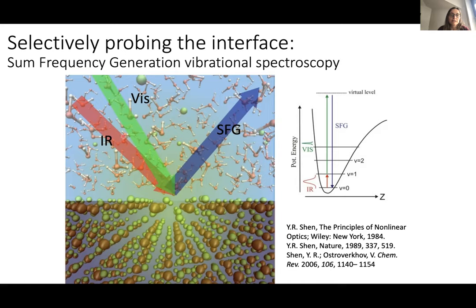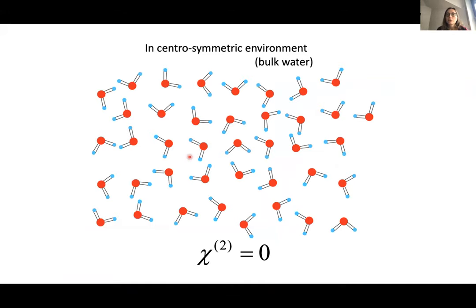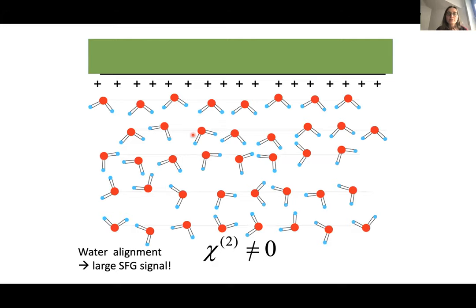In simple terms, SFG works by the combination of an IR and a visible beam, which sum into this sum frequency generation. What is special is that the selection rules are such that if we are dealing with a centrosymmetric environment — for example, bulk liquid water — the signal recorded by the experiment is actually zero. The Chi-2 response function gives no signal from the bulk, which is why this technique can selectively address the interface. If we have an interface that breaks the symmetry, this causes a reorientation of the waters and produces a signal different from zero.